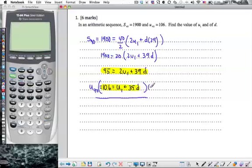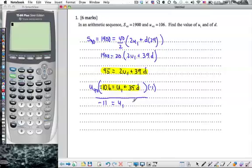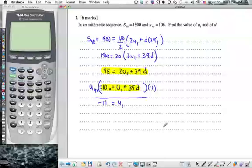So 95 minus 106 will be negative 11. Negative 11 equals 2 minus u1. It's just u1. And the 39d's cancel away. That's the whole point, right? Great.